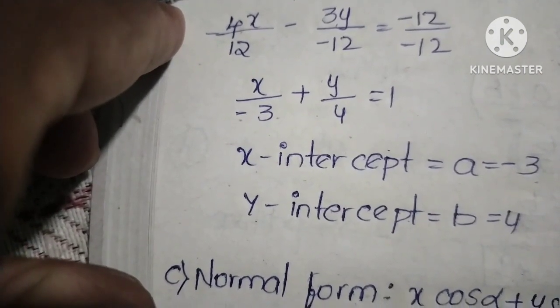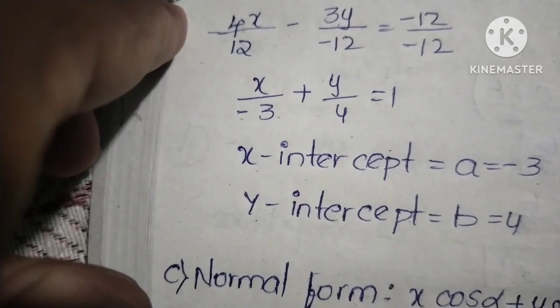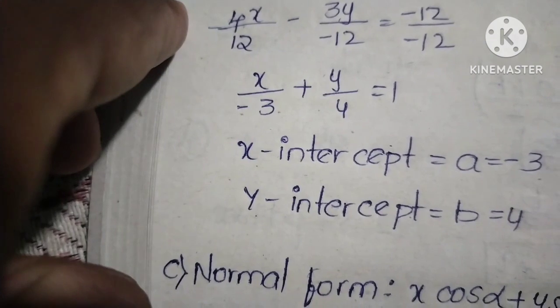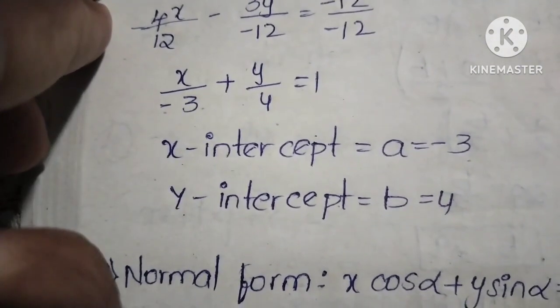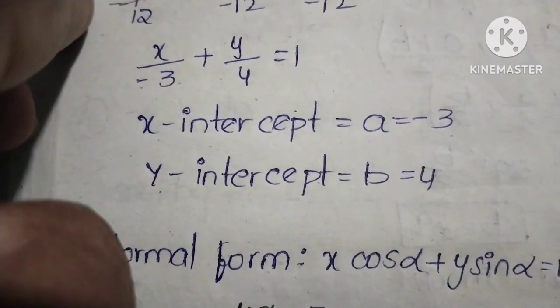Simplifying, we get x by minus 3 plus y by 4 equals 1. The x-intercept a equals minus 3, and the y-intercept b equals 4.